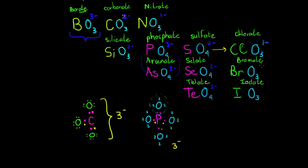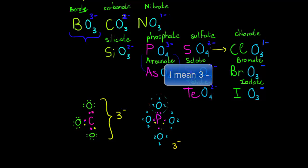Bromate and iodate also each have a one-negative charge — we can just write a negative sign without the 1. So to summarize the pattern: the T group goes three-negative, two-negative, one-negative; the 4 group is three-negative, two-negative, one-negative; and the last group is two-negative, one-negative.